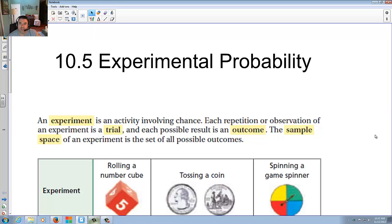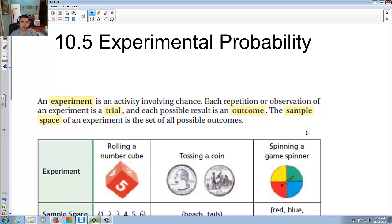An experiment is an activity involving chance. Each repetition or observation of an experiment is a trial, and each possible result is an outcome. The sample space of an experiment is the set of all possible outcomes. Simply put, an experiment means you're going to try something, and to try means to have a trial. You're going to basically decide what's going to happen.